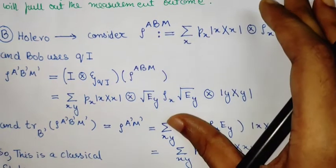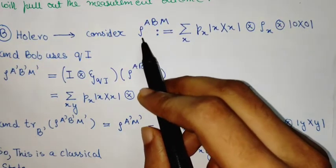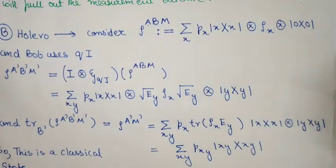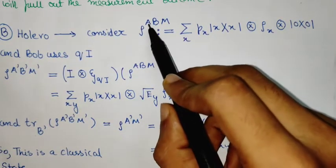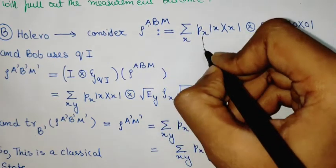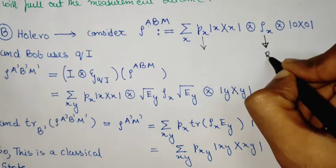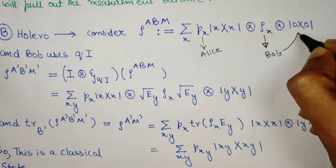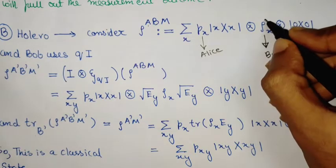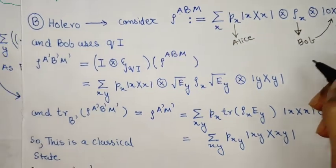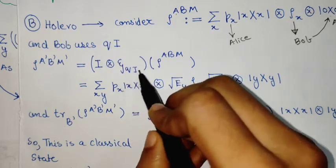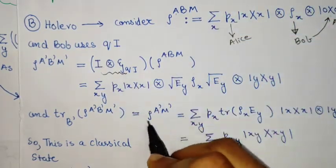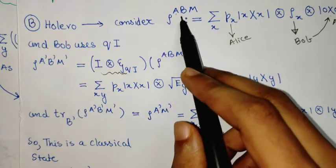In the Holevo bound, consider a tripartite system: Alice's state, Bob's state, and the apparatus. Alice prepares state rho_x and supplies it to Bob. Bob brings in the apparatus and attaches it to the state he will measure. The measurement he performs is via this quantum instrument — this is the map that Bob is applying. Alice's state is untouched, and we see this is the final state of the system.